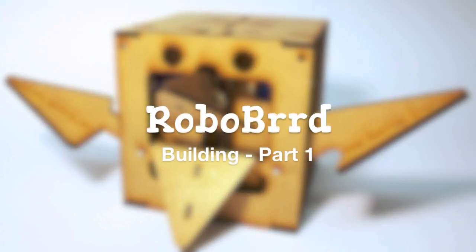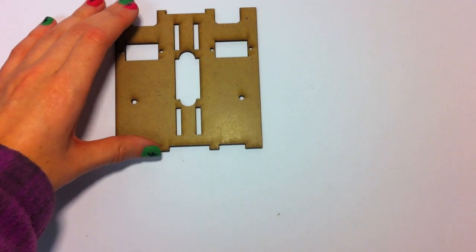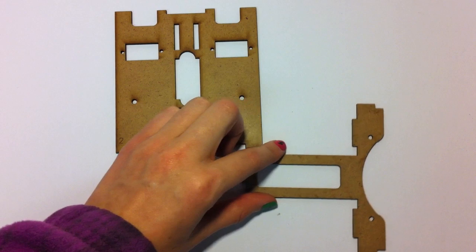All right, so it's time to create the first assembly of our RoboBird kit, and for this we'll need the wing face as well as the two beak faces.